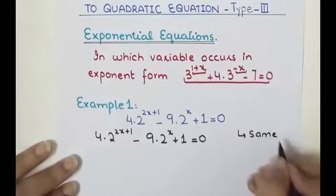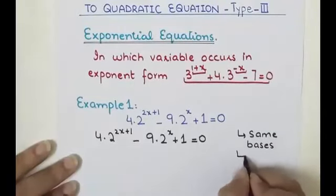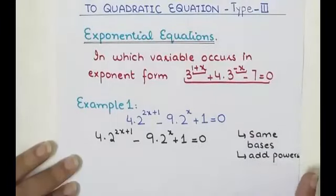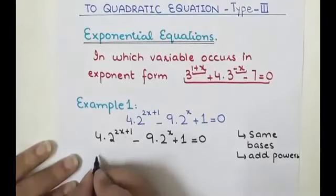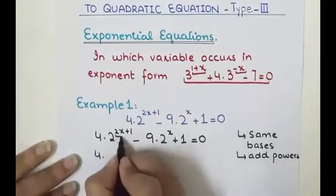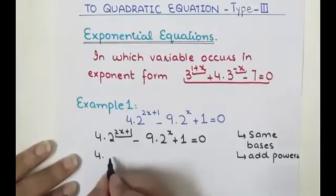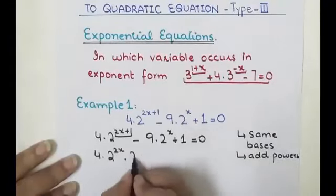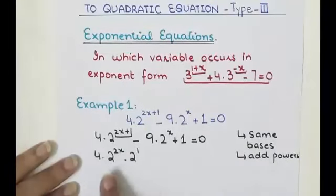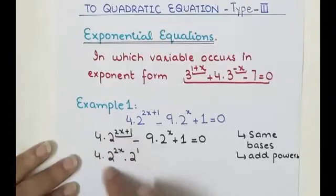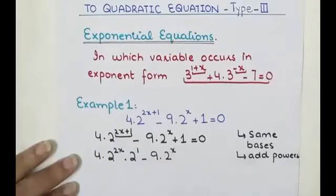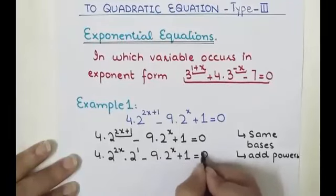When bases are the same, we can add their powers. So here we can split the term 2^(2x+1) as 2^(2x)·2^1, since their bases are the same and adding the powers gives back the original term. So we have 4·2^(2x)·2^1 - 9·2^(x+1) = 0.